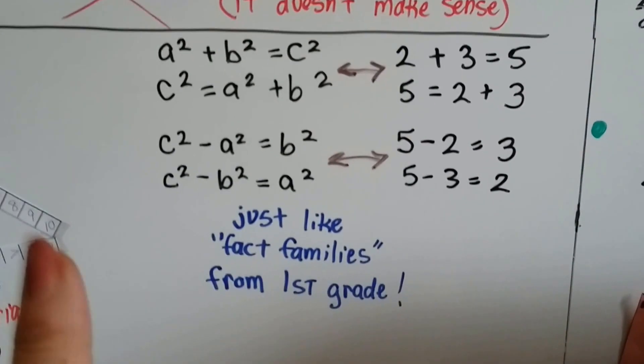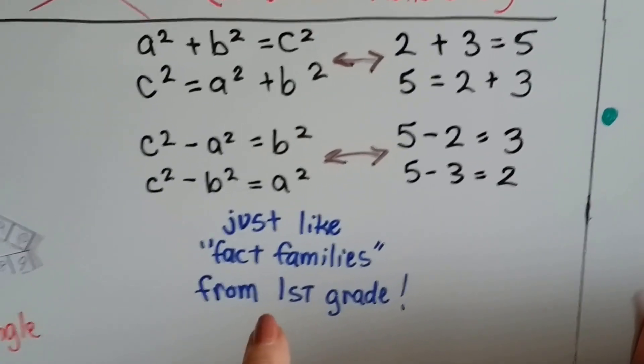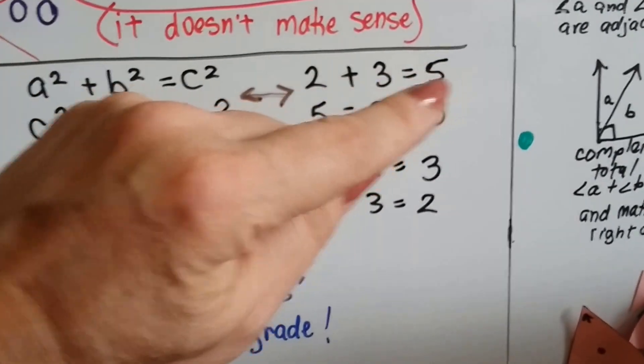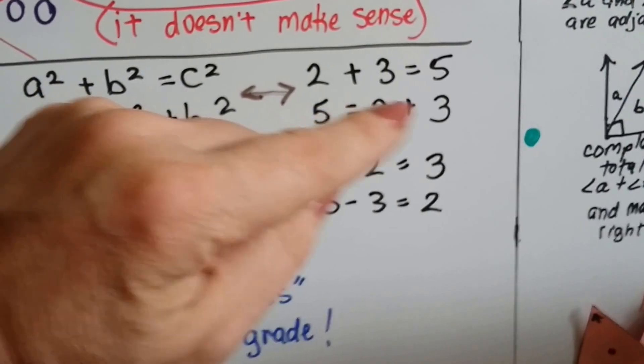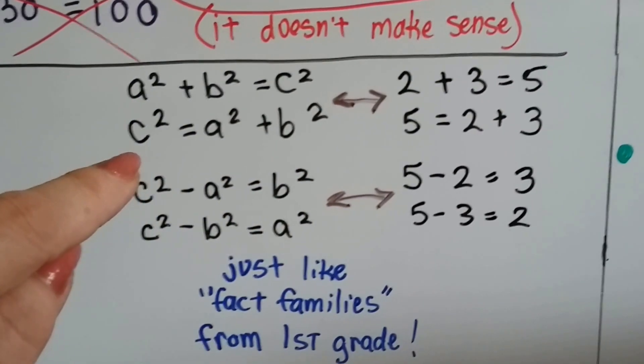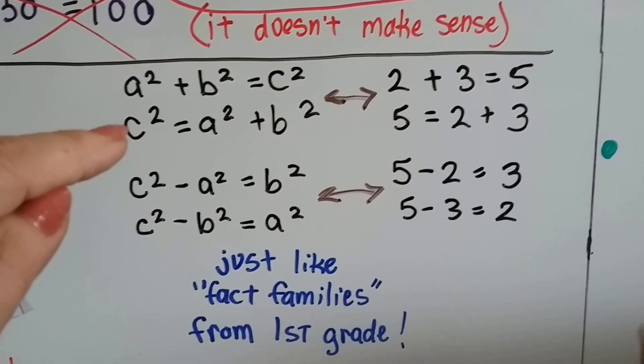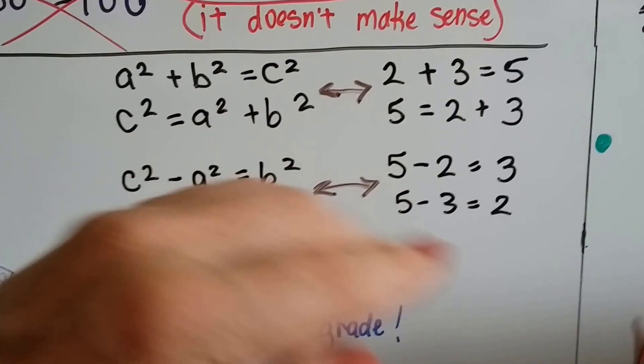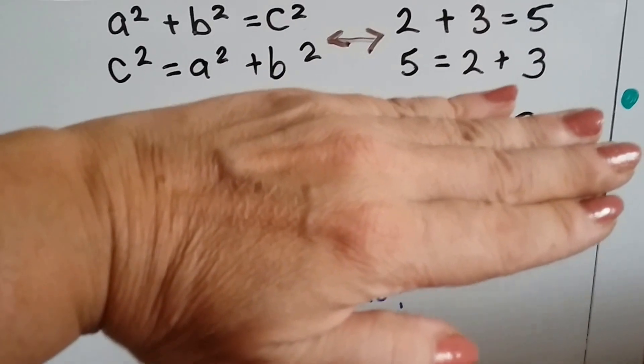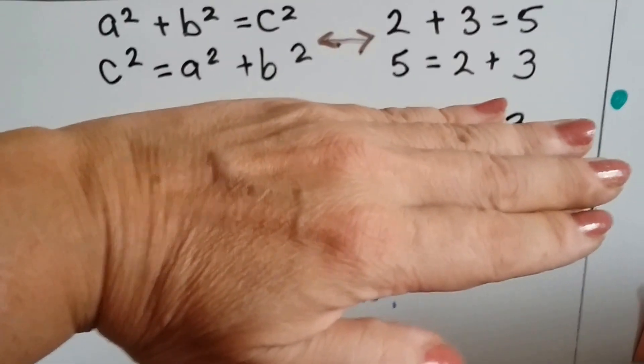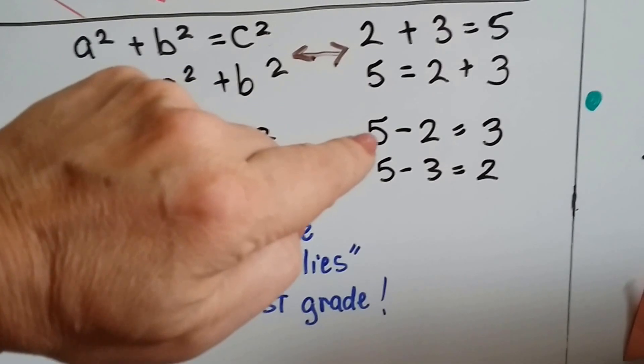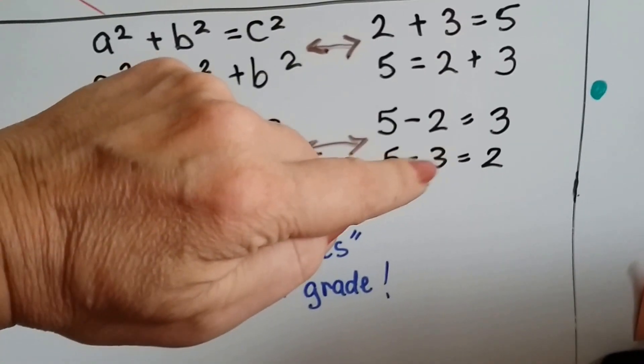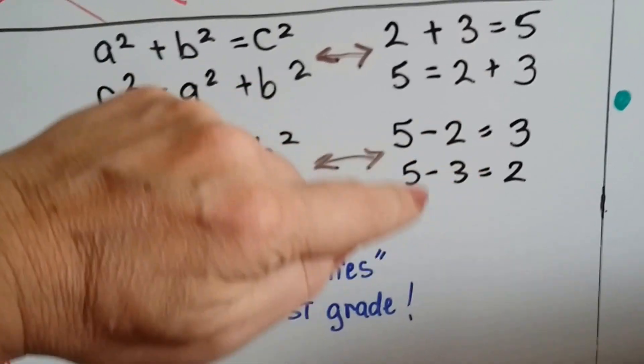Now, if you can remember from first grade, we had fact families. And we said that if 2 plus 3 equals 5, then 5 equals 2 plus 3, right? Well, it's the same thing with this. This is the Pythagorean theorem, here's the converse. a squared plus b squared is c squared, c squared equals a squared plus b squared. It's the same thing as those. Now, remember in first grade, if these were true, then we could say 5 take away 2 equals 3, and 5 take away 3 equals 2. They're just fact families, right?